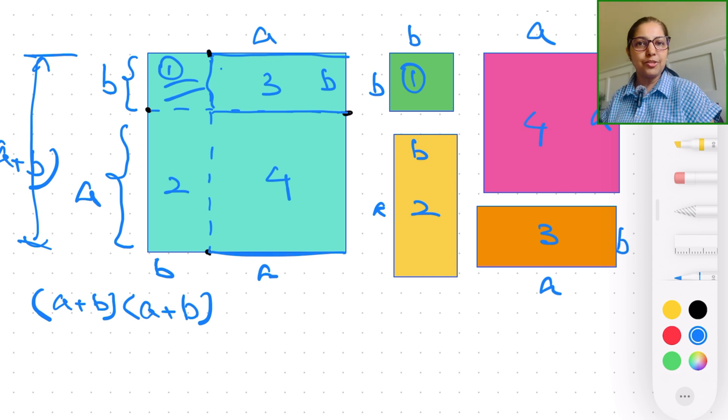So would it be correct for us to say that the area of the big square, which is (a+b) times (a+b), should be the combination of the areas of each of these shapes, 1, 2, 3, and 4, right?